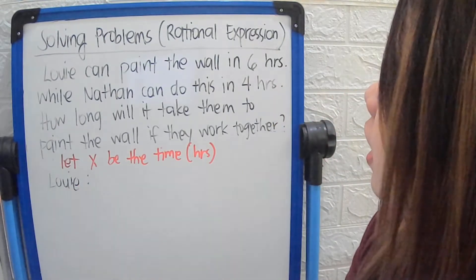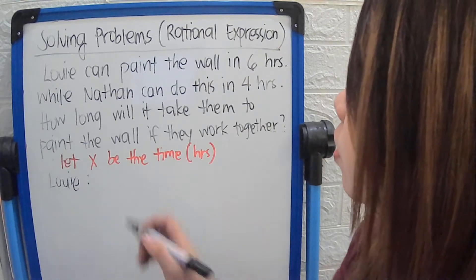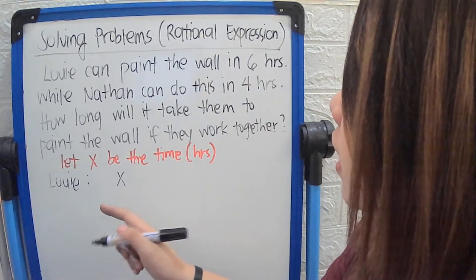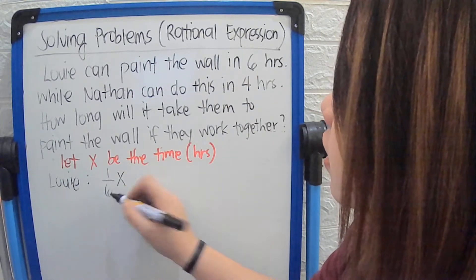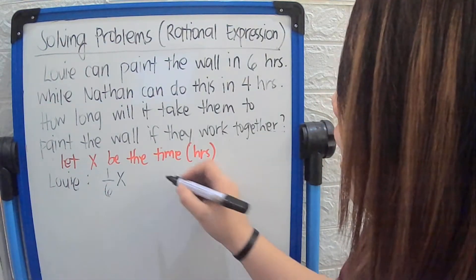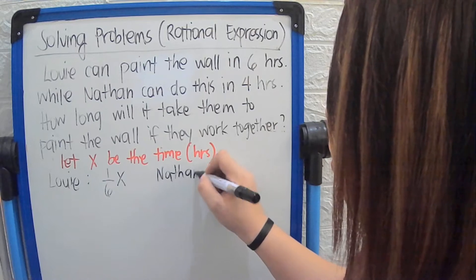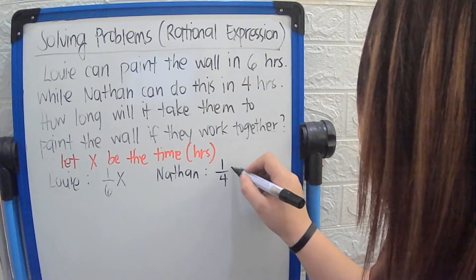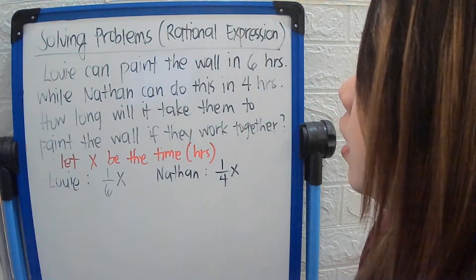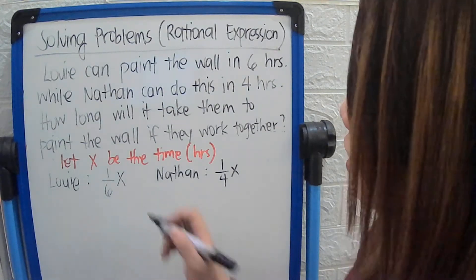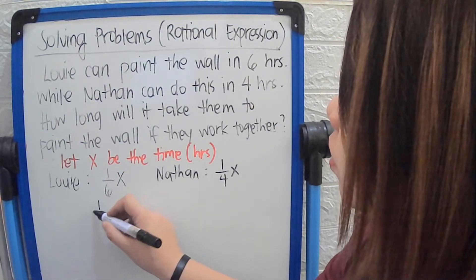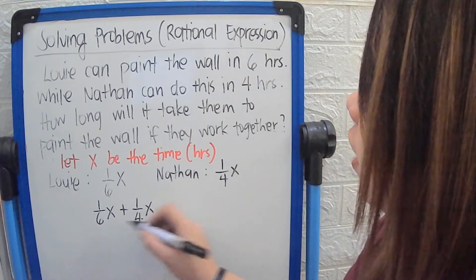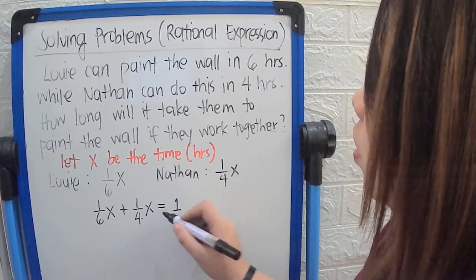For Louis, he can paint the wall in 6 hours, so that will be 1 over 6 — one sixth of an hour. Whereas for Nathan, he can paint the wall in 4 hours, so that will be 1 fourth of an hour. Since they will work together, we express it as 1/6 x plus 1/4 x. The operation is addition, and since they complete the job together as 1, we equate it with 1.